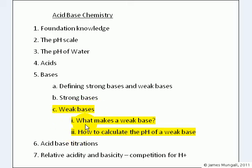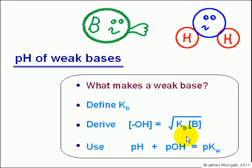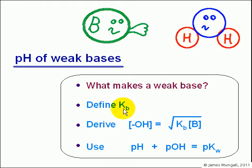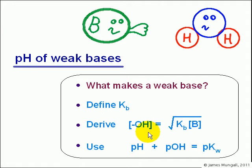So we've arrived at weak bases. We're going to say what makes a weak base and how to calculate the pH of a weak base. Here we've got a little cartoon: B is the base and there's a water molecule, and a weak base is going to try and grab one of those H pluses off a water molecule. First we'll say what makes it a weak base, then talk about the calculation, and define a new equilibrium constant Kb. Then we'll derive an equation — hopefully it looks quite familiar, similar to the equation for working out the H plus concentration in a weak acid.